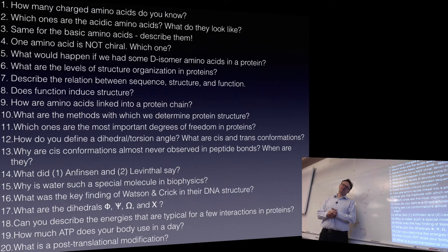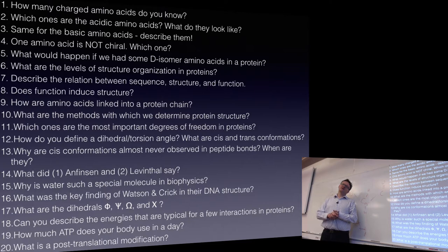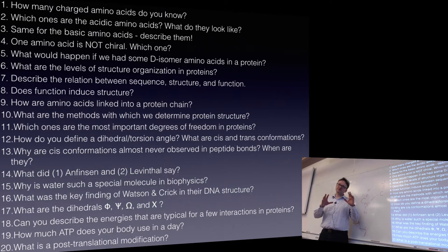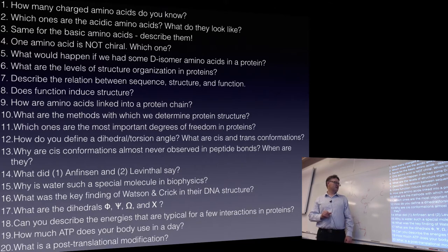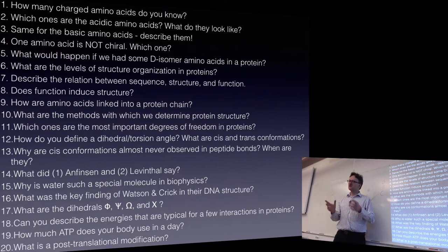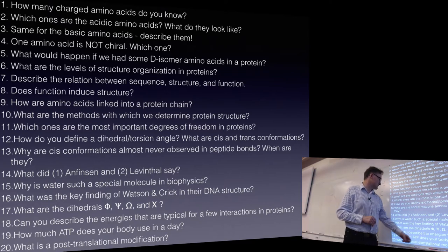Post-translational modification is modification placed on the chain after translation, though there are cases when they're still on the ribosome and parts start being modified already. This can include removing parts of the C- or N-terminus, cross-linking, glycosylation. The conceptual model is that we move from DNA to RNA and then from the RNA we create the polypeptide chain. Post-translational modifications are things that come in after that step — we modify the polypeptide chain. That is actually one of the reasons why the idea that proteins can always fold spontaneously is not strictly true — there are always exceptions.